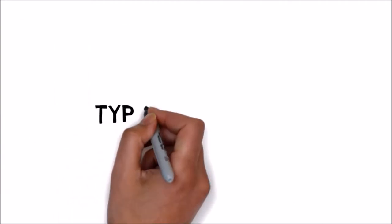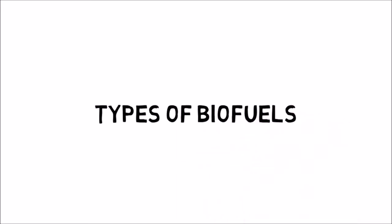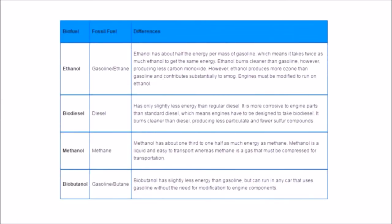Types of Biofuels. The substance structure of biofuels and petroleum derivatives vary similarly. The greater part of biofuels talked about in this copyist are of fluid shape as they are anything but difficult to transport. The underneath table thinks about biofuels and their petroleum derivatives partners.